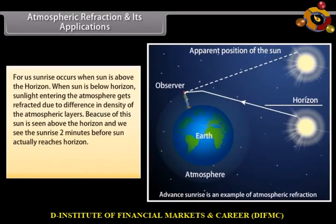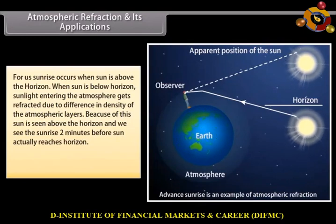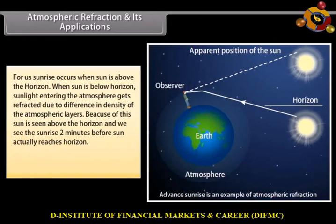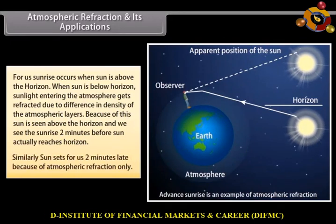For us, sunrise occurs when the sun is above the horizon. When the sun is below the horizon, sunlight entering the atmosphere gets refracted due to the difference in density of the atmospheric layers. Because of this, the sun is seen above the horizon and we see the sunrise two minutes before the sun actually reaches the horizon. Similarly, the sun sets for us two minutes late because of atmospheric refraction.